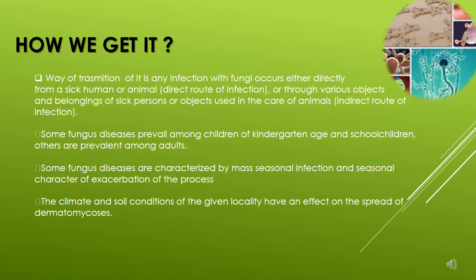How do we get it? There are different ways of transmission — directly, when you touch a sick human or animal directly, or indirectly, when you touch various objects or things that the sick human or sick animal touched before. Some fungus diseases prevail among children of kindergarten age and school children, while others are prevalent among adults.